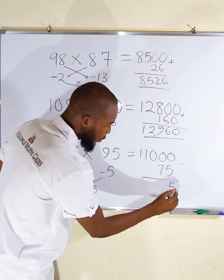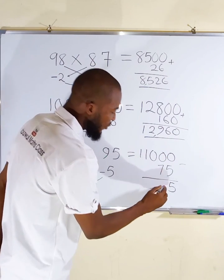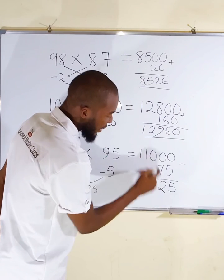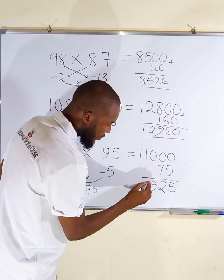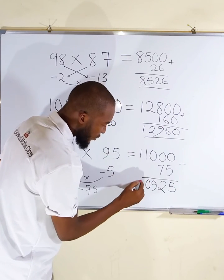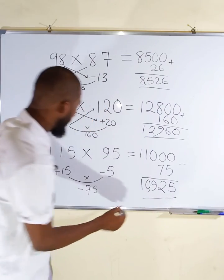This is 9 minus nothing. Remember we have taken this bundle, so we have 0 here and this is 1. Finally we have 10,925 after multiplying 115 by 95.